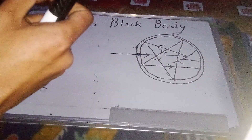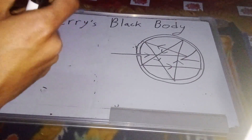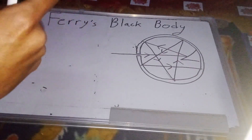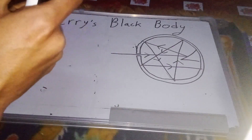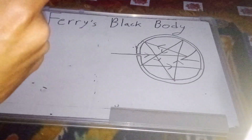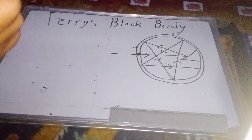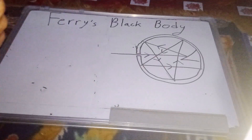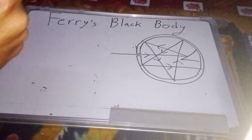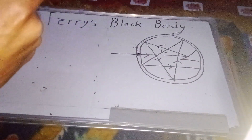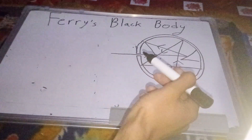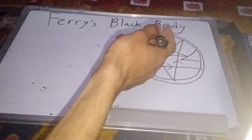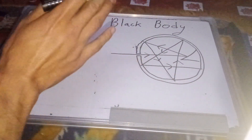It is a perfect black body. I will tell you about Wien's displacement law. If you use this black body, you can use the effect of the black body and examine the image and light radiation position.